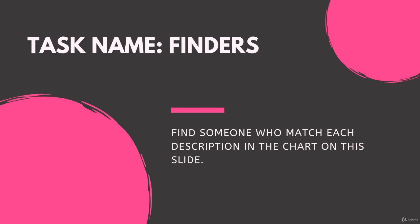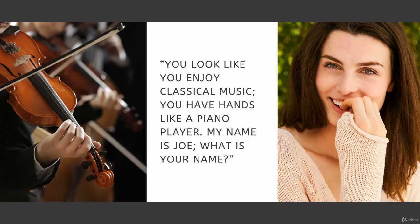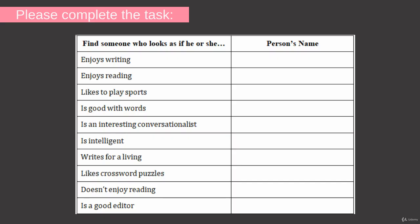Task name: Finders. Your task is to find someone who appears to match each description in the chart on this slide. For example, if Sue seems like the sort of person that would enjoy classical music, I would approach her and say, 'You look like you enjoy classical music. You have hands like a piano player. My name is Joe. What is your name?' I would then write down Susan's name for that entry and continue the hunt. Please complete the task and submit your answers in our Q&A section.